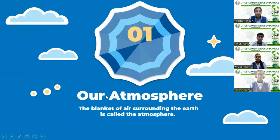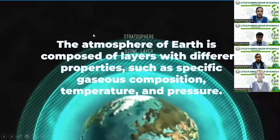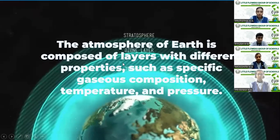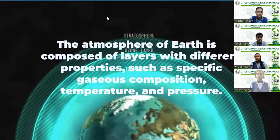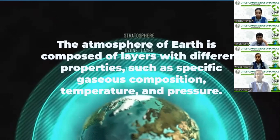Our atmosphere is the blanket of air surrounding the earth. I would like to invite Mokshita to tell us more about the atmosphere. As she told, our ozone layer has been depleting day by day, and it is the responsibility of humankind to prevent it. But the question is, is only the ozone layer present in our environment? Of course not. There are many other layers present in our atmosphere at different levels because of different temperatures and density.